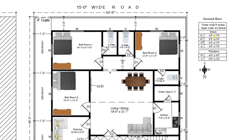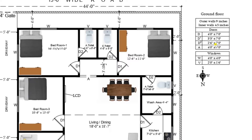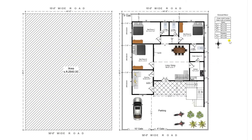The main door is 4 feet by 7 feet. Doors of bedrooms, D1, are of size 3 feet 3 inches by 7 feet. Doors of toilet and kitchen, D2, are of size 2 feet 6 inches by 7 feet. 'A' indicates an arch of size 4 feet by 7 feet. 'W' indicates windows of size 4 feet by 4 feet. 'V' indicates a ventilator of size 2 feet by 1 foot 6 inches. These are the dimensions.